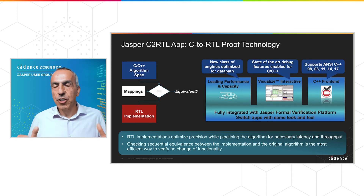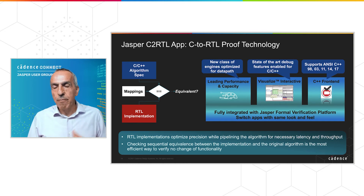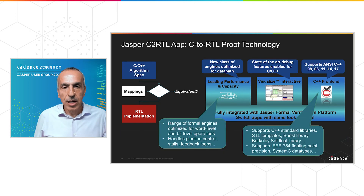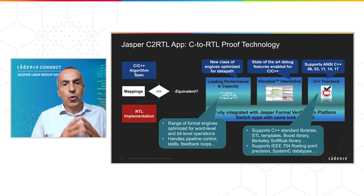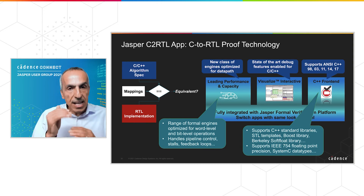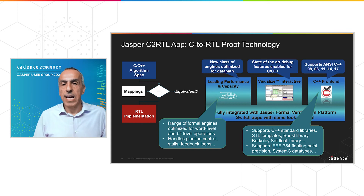The solution to this verification problem is the C2RTL app from Jasper — it checks that optimized RTL implementations match the C/C++ arithmetic spec. Note that we are talking about handwritten RTL here. On the engine side, we have a range of formal engines optimized for word-level and bit-level operations in the context of data path verification. It handles pipeline control stalls, feedback loops, and other challenges. On the language side, it supports C++ standard libraries.